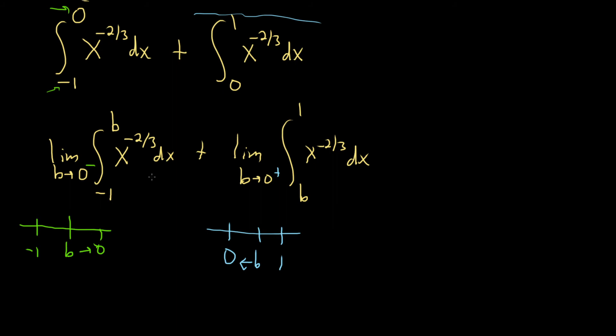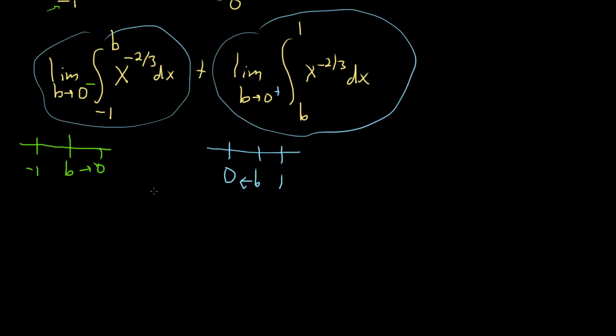It's better to use different variables, but it doesn't really matter. This b is a separate process from this one. There are two separate limits. You don't want to combine these. As long as you keep them separate, you can use the same variable. So let's go ahead and integrate each of these.